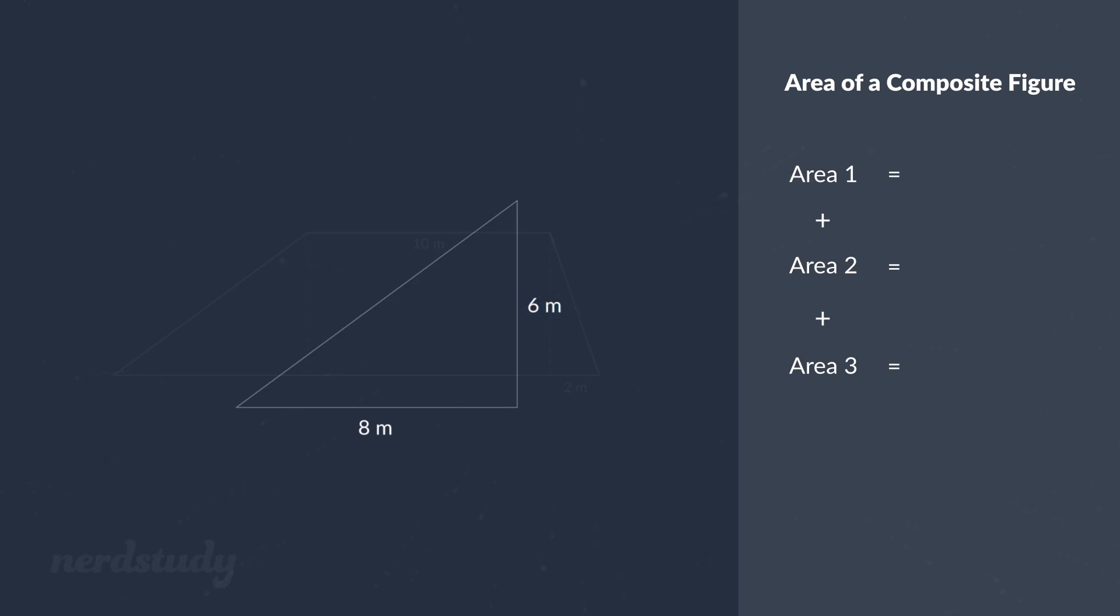Now we know that the area of a triangle is base times height divided by 2. So if we plug these numbers in we would get 8 times 6 divided by 2 which is 24 meters squared.